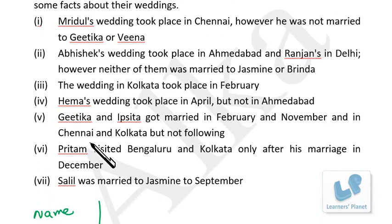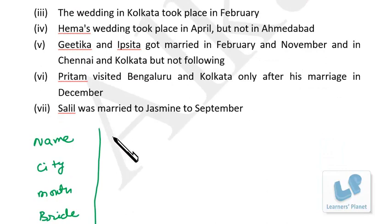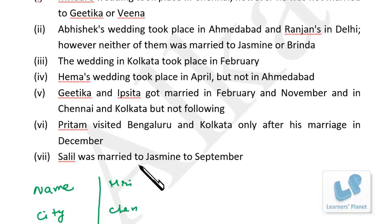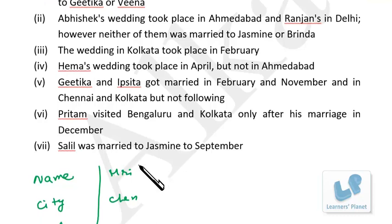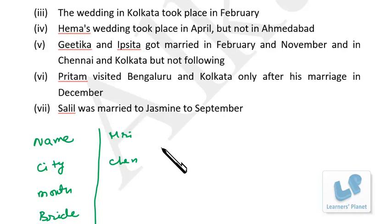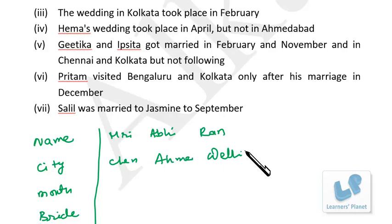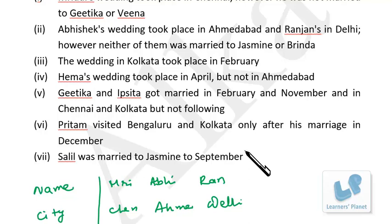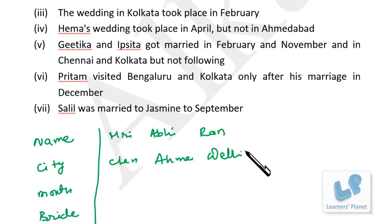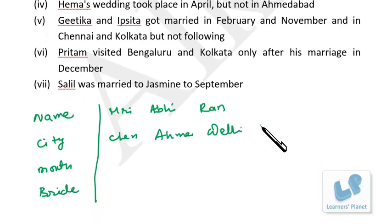Mridul's wedding took place in Chennai, so we write Mridul — city: Chennai. Abhishek's wedding took place in Ahmedabad, so Abhishek — Ahmedabad. And Ranjan is in Delhi. The wedding in Kolkata took place in February, so we note Kolkata — month: February.